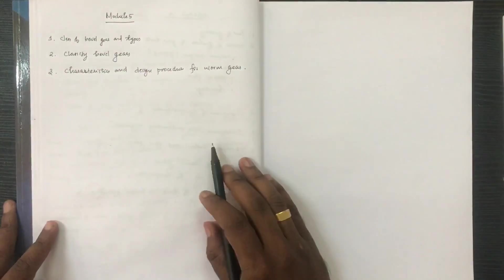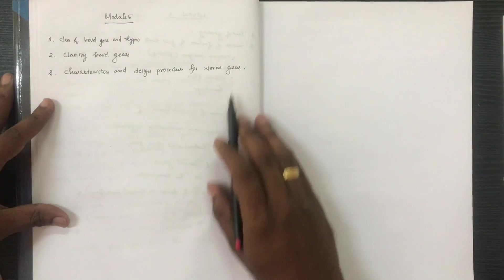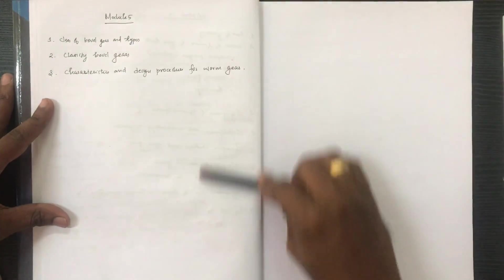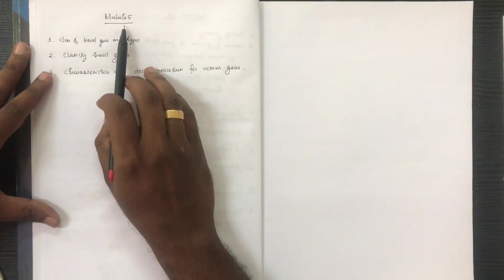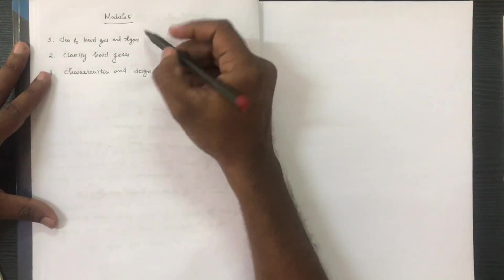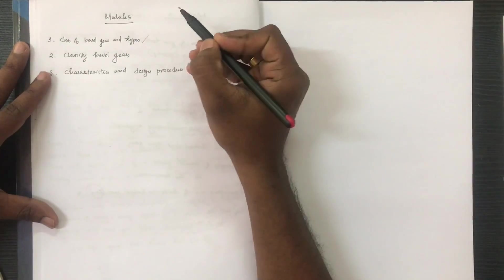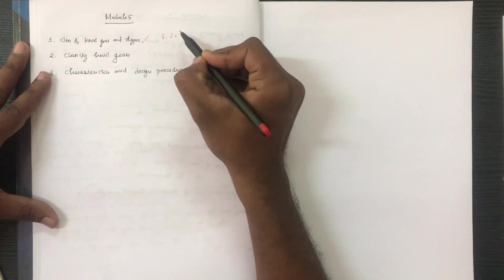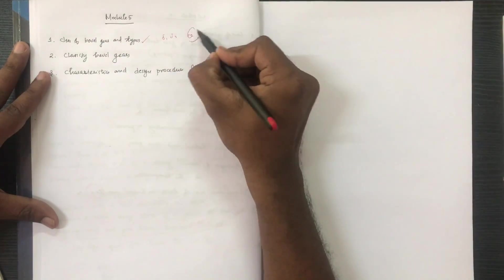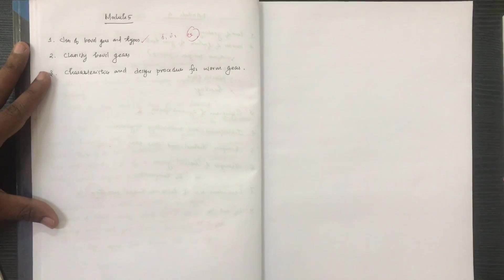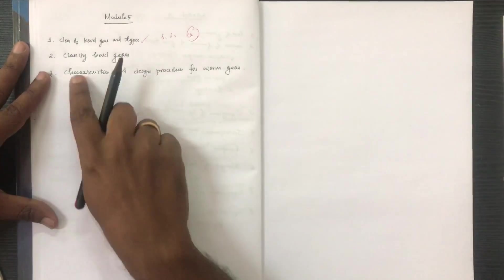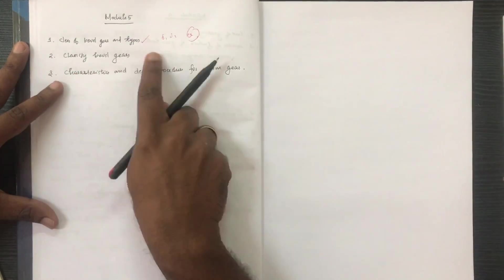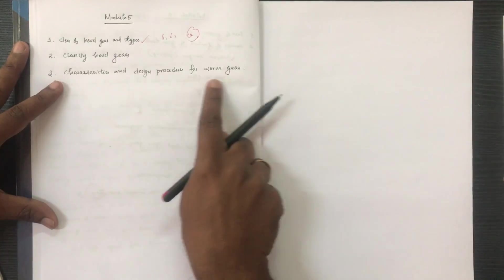Module 5 covers bevel gear types. Delta 1 and Delta 2, with theta at right angle or acute angle. Classification of bevel gears, characteristics, and design for worm gear are all included.